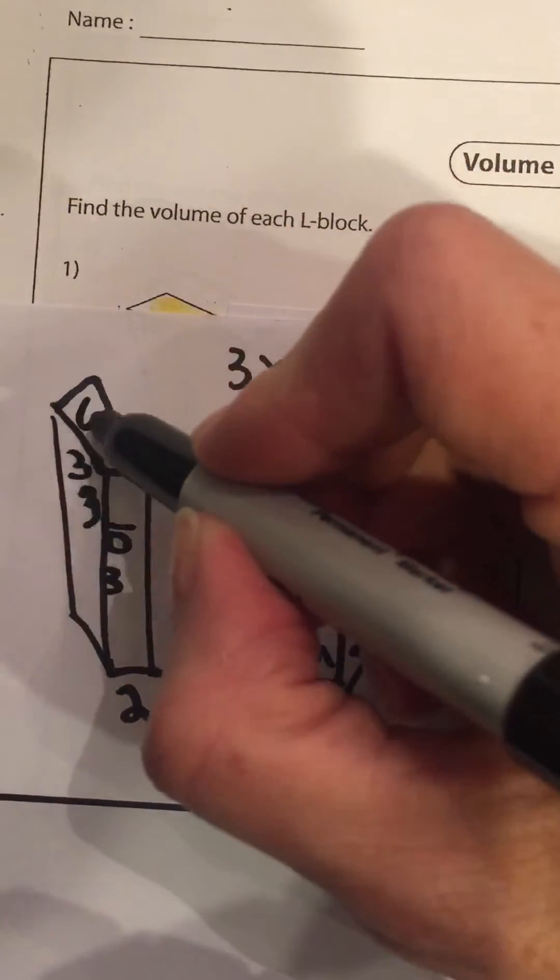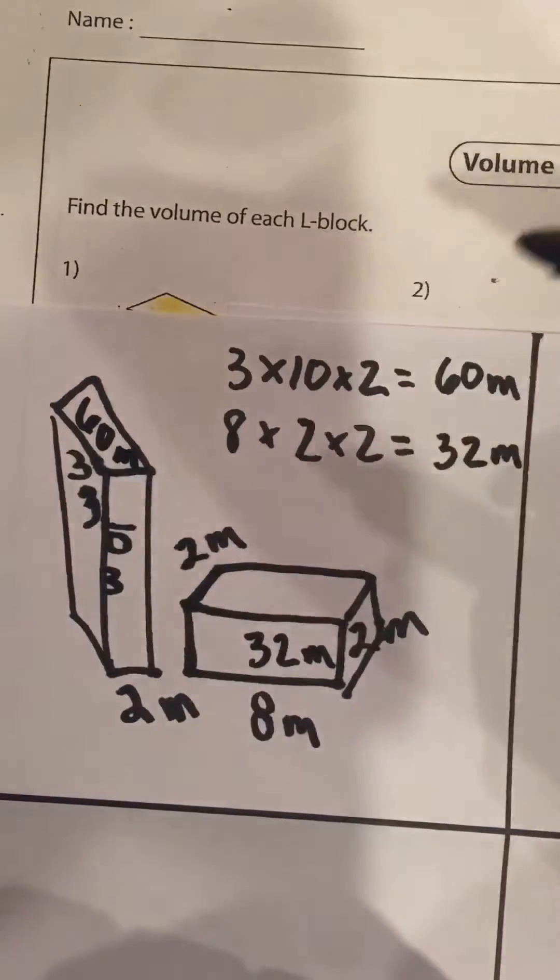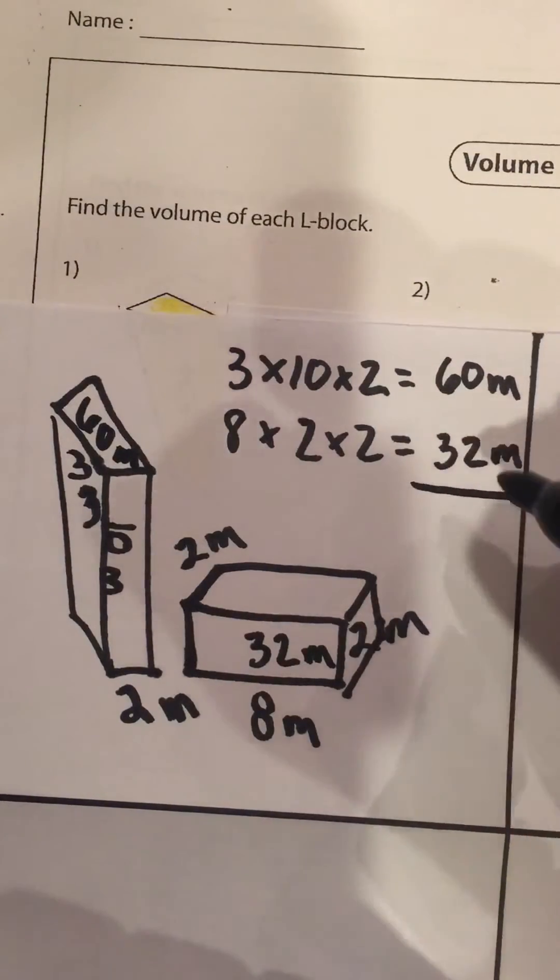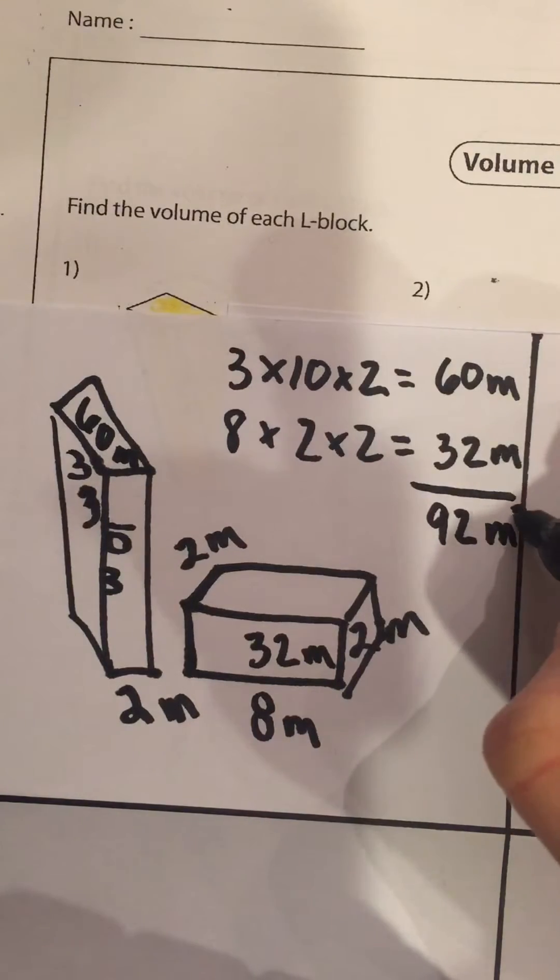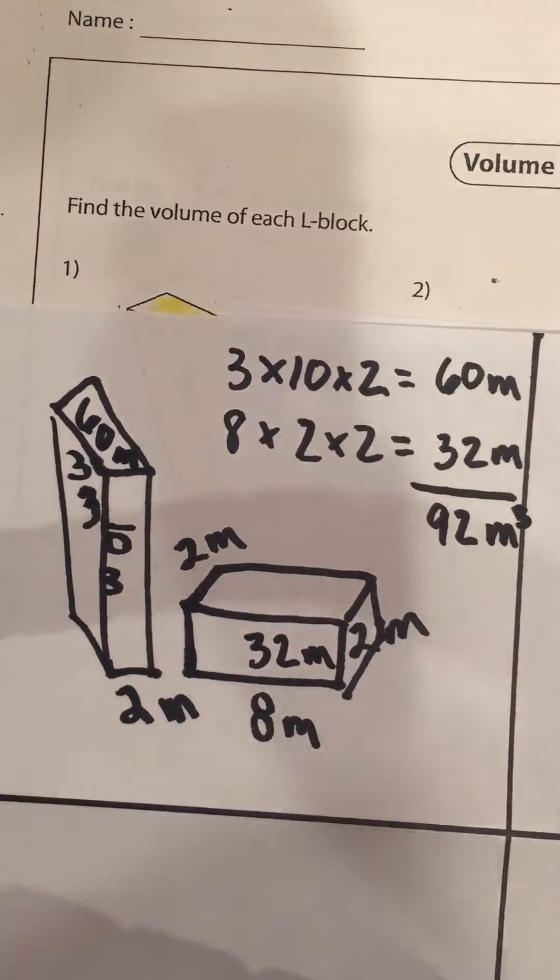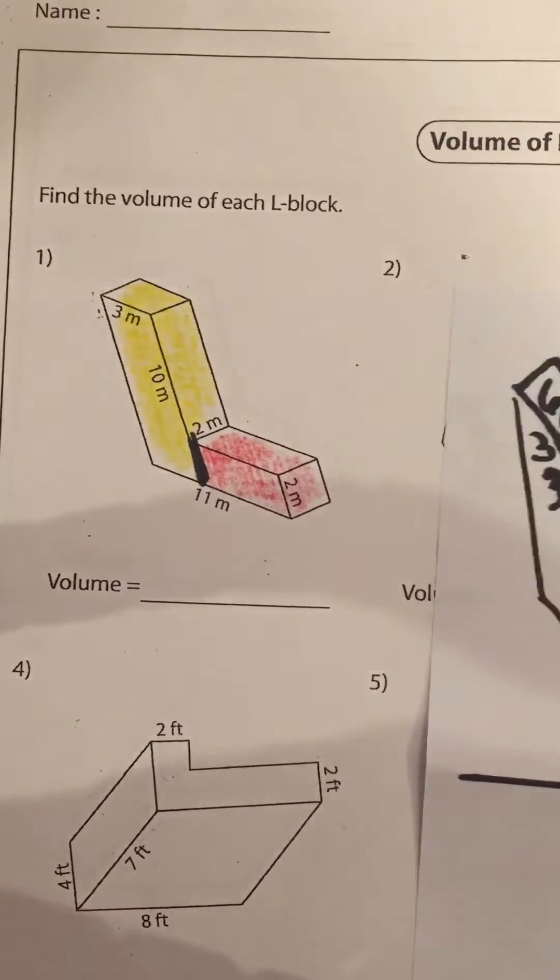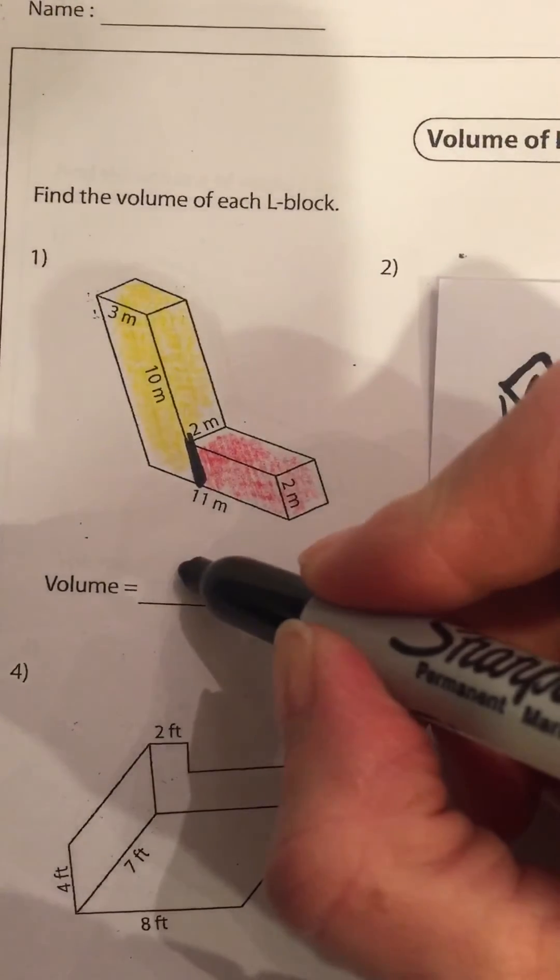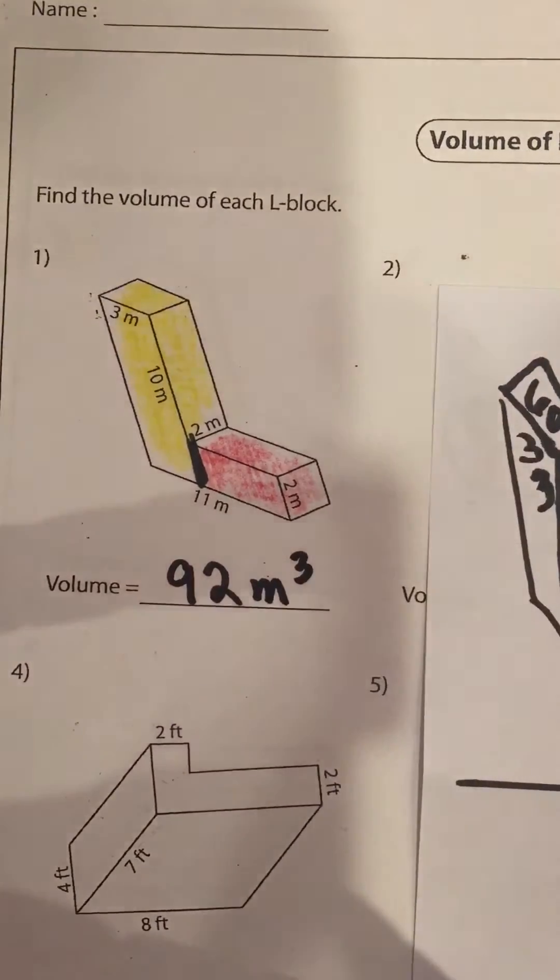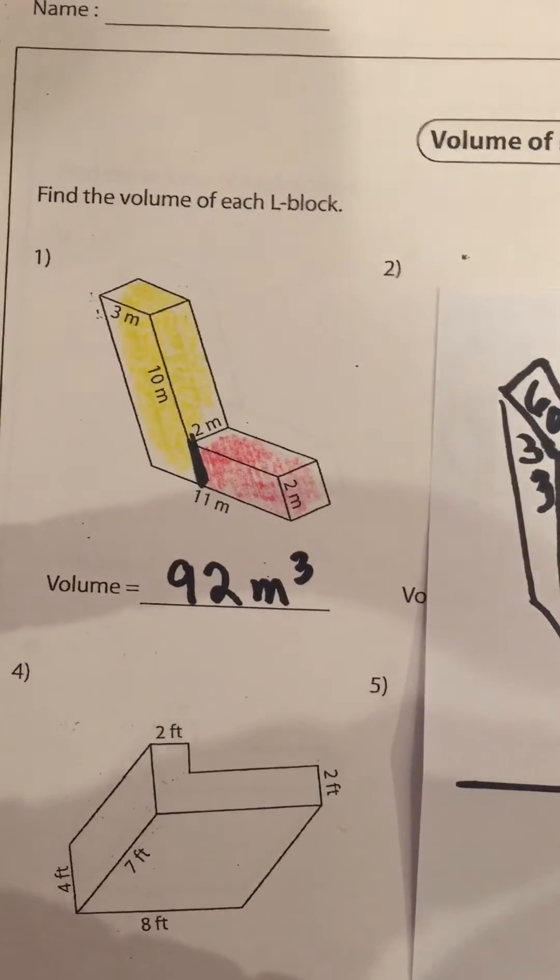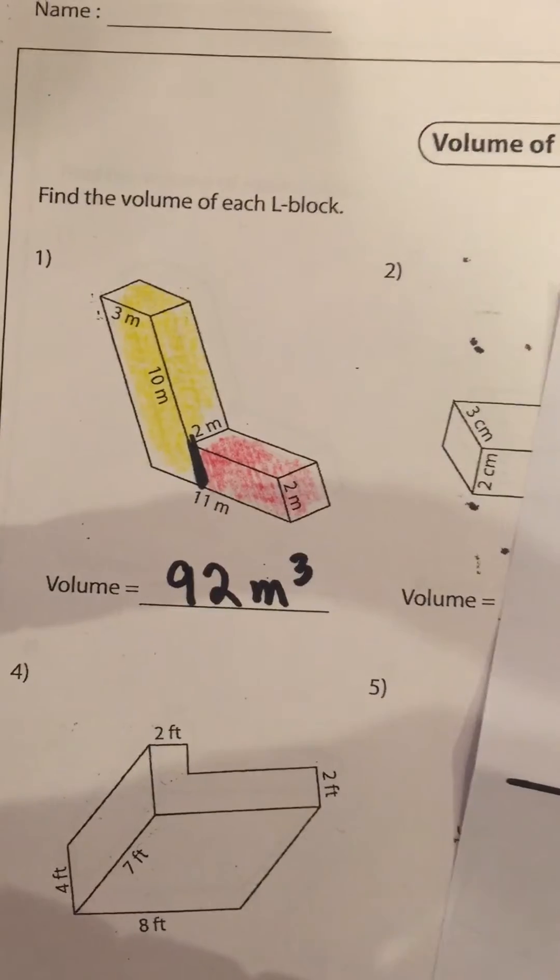Okay, let's label inside our new shapes. We have two shapes and when we add them together here we get 92 cubic meters. We can fill that in, 92 cubic meters.